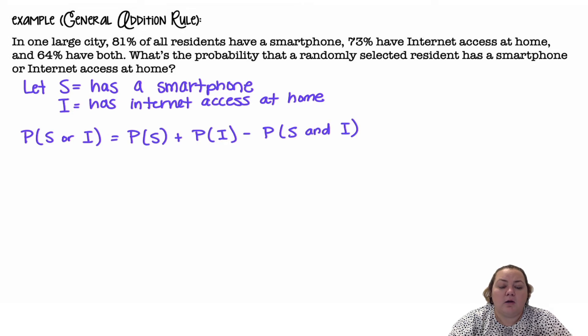Probability of S or I would be the probability of S plus the probability of I minus the probability of S and I. Because I don't want that 64% that have both.